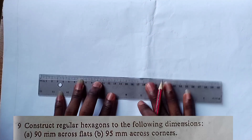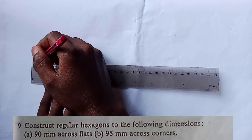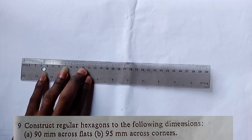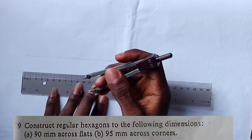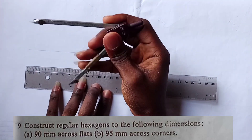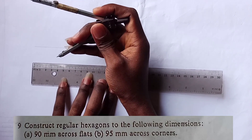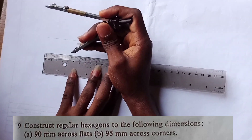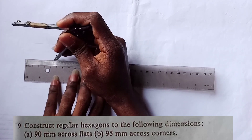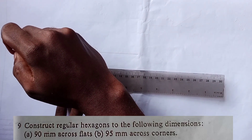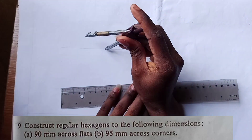First of all, we will draw a straight line. With our straight line, we use our compass and measure out 45mm, which is 4.5cm on the scale. The reason we are measuring out 45mm is because the diameter of the circle we are going to make is 90mm, so 45mm is the radius. Put it at any point on our straight line.